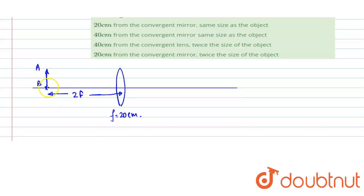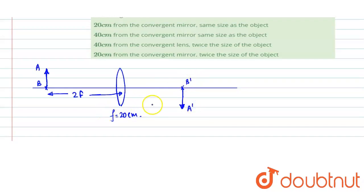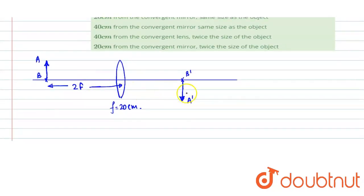We can also say it is placed at its center of curvature. Then on the other side, at a distance of 60 centimeters, the convergent mirror is placed. As we know, if the object is placed at 2f in front of the convex lens, its image will be formed at 2f on the other side, and this image is inverted. The size will be the same — 20 centimeters — formed again at distance 2f, or 40 centimeters, from the lens on the other side.